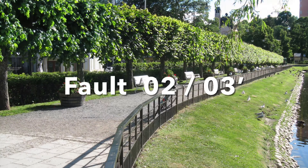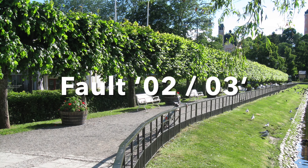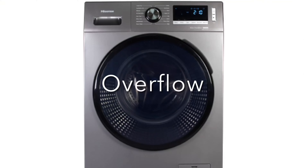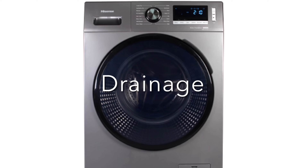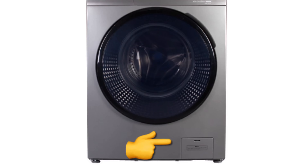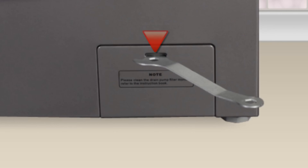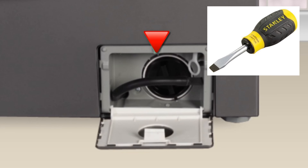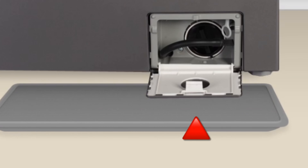The main cause for F2 and F3 error is either water reached the overflow level or there is a drainage fault. To remove the drainage blockage, you may need to clean the pump filter. Open the pump filter using the supplied spanner or a suitable tool like a screwdriver. Place a container or towel close to the pump filter to collect any remaining water in the machine.